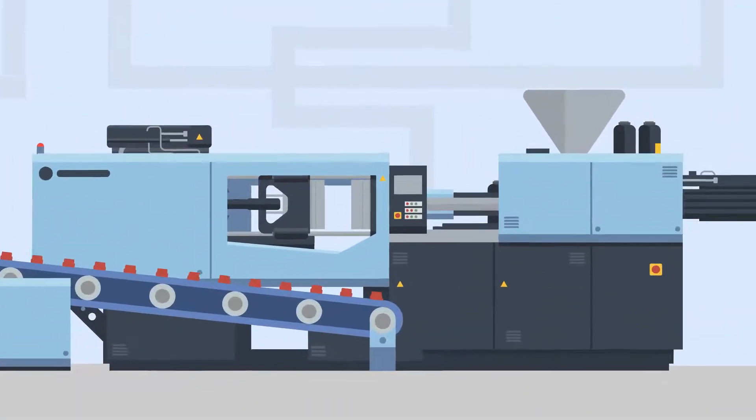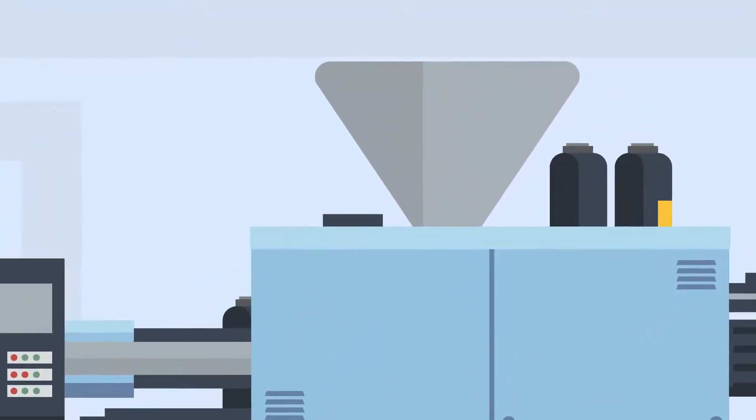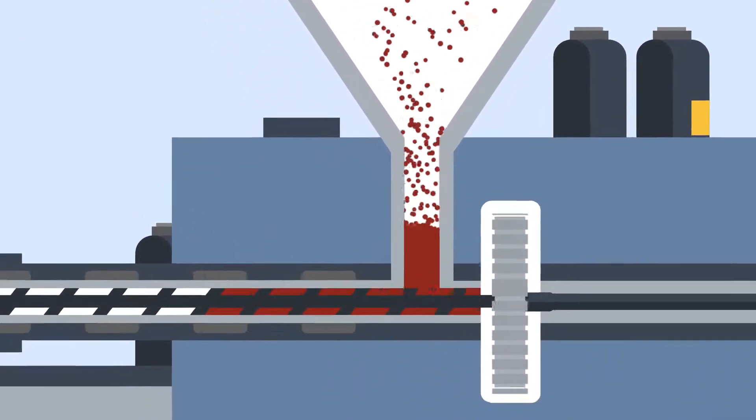So let's take a look at how the injection moulding process works. First, raw plastic pellets are poured into the hopper at the top of the machine. This can be one type or a combination of different plastics.